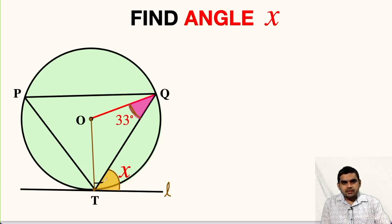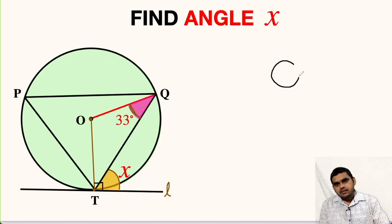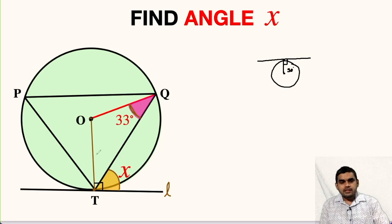So this angle will be 90 degrees. Why? Because there is a theorem that if this circle has center at this point and a tangent is drawn to it, this is the point of contact. If we draw a line segment joining these two points, then they are perpendicular to each other. O is the center, T is the point of contact, so the line segment will be perpendicular to the tangent.